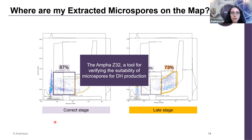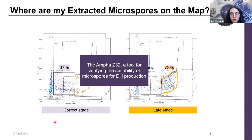Let me add that genetic variation is known to create differences in bud size or anther size in different genotypes of the same species. So every time you work with a different genotype, you have to reassess what kind of starting material is most suitable for your culture. With our instrument, you have a very easy tool to assess the microspore developmental stage and thereby gain a checkpoint for the start of the culture.